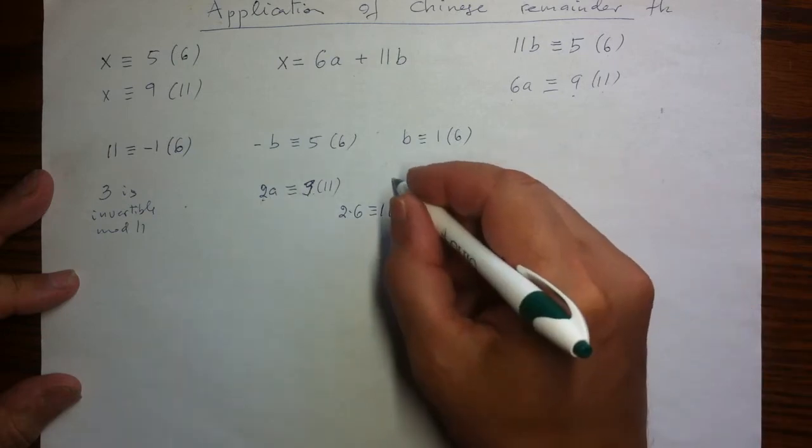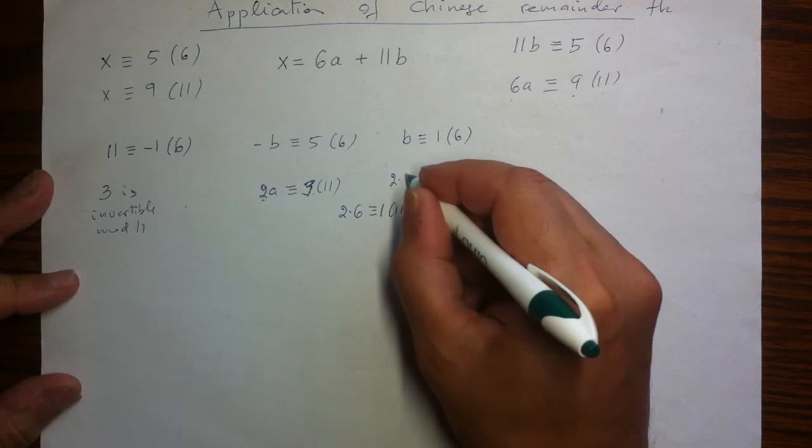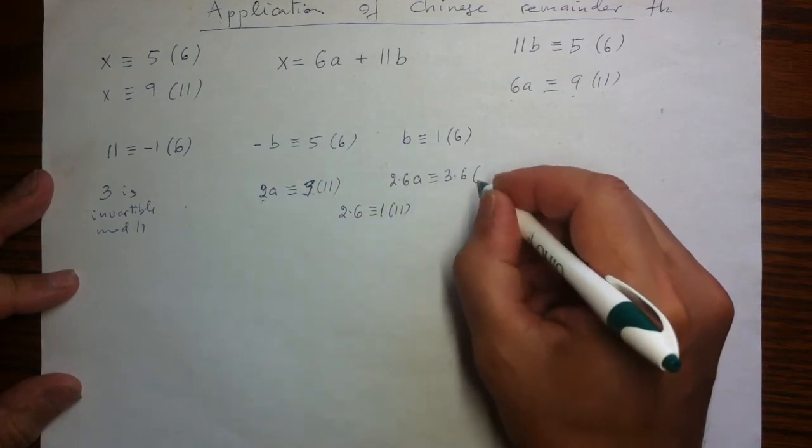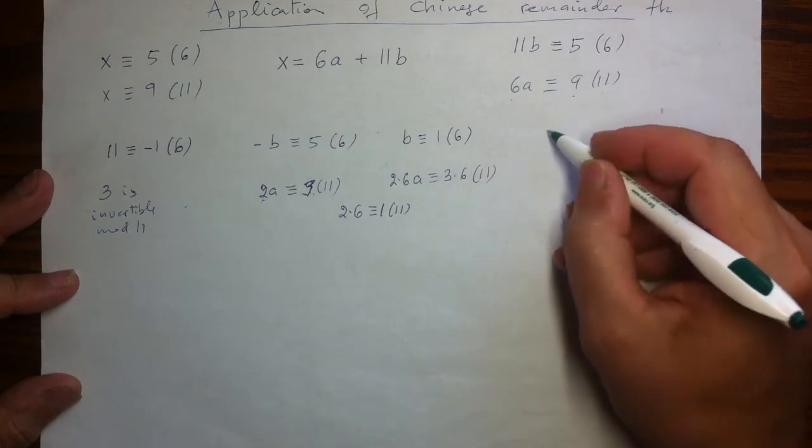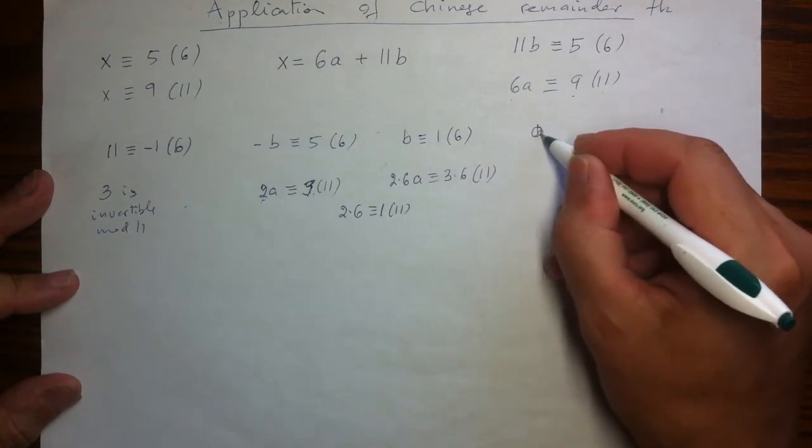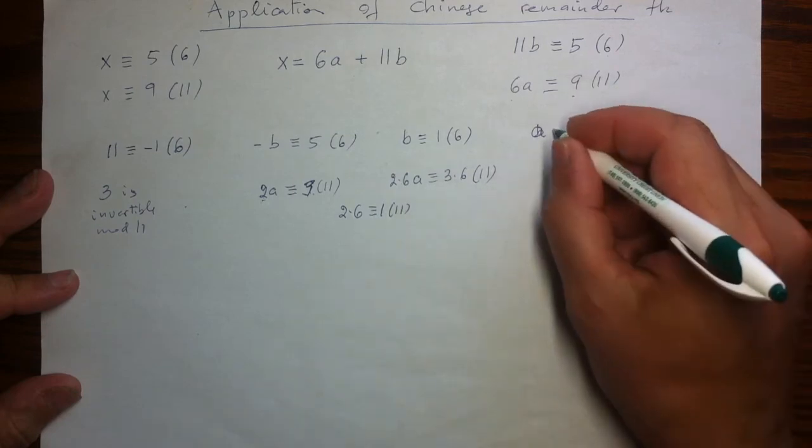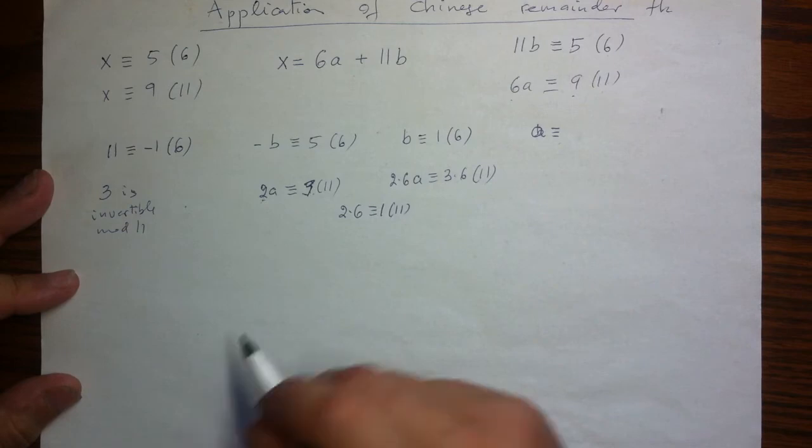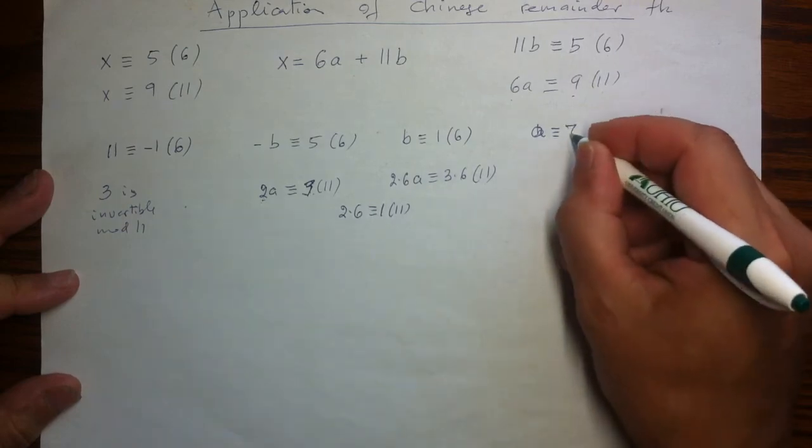So if I take my equation and multiply both sides by 6, I will have just 2 times 6a congruent to 3 times 6 mod 11. And while just finishing the answer for a, this is 1. So a is congruent to whatever the product is, which is 18, but 18 mod 11 is 7.